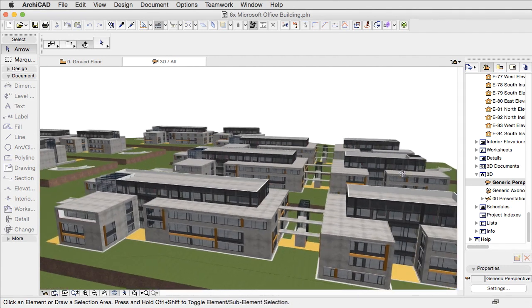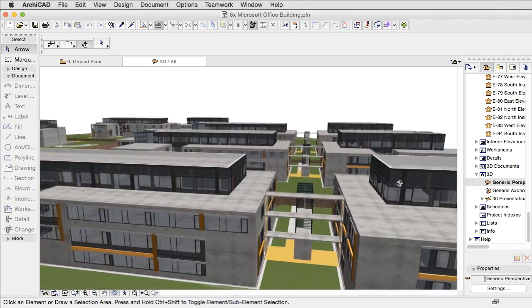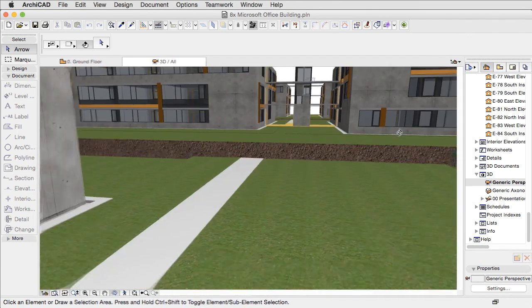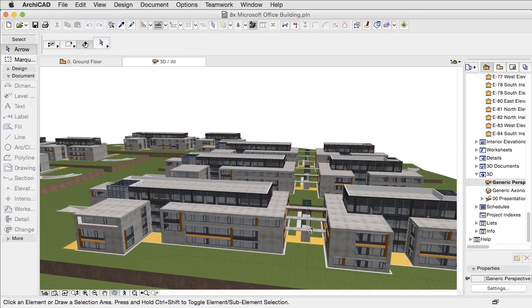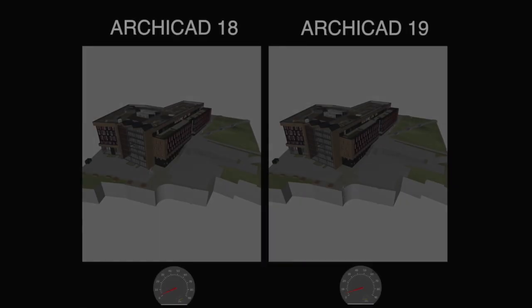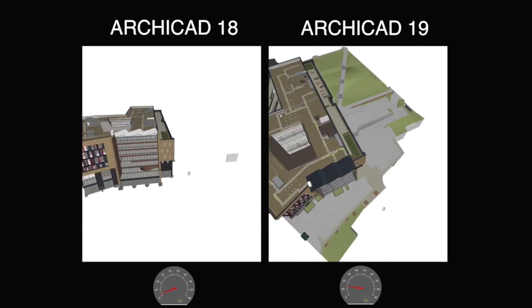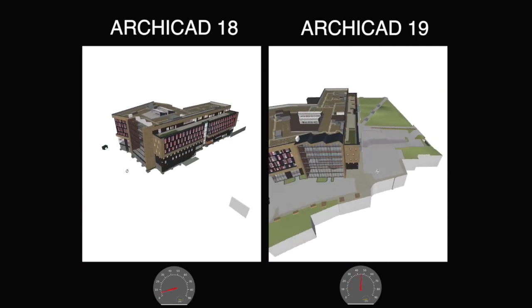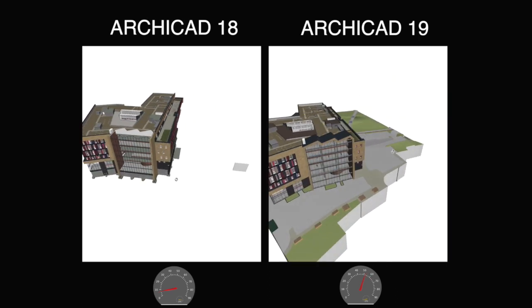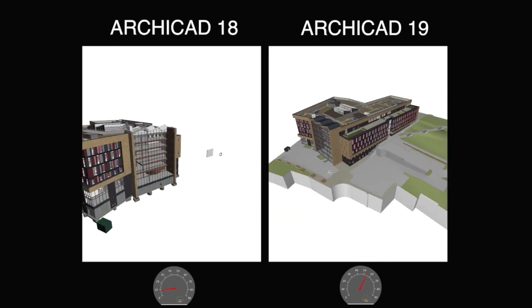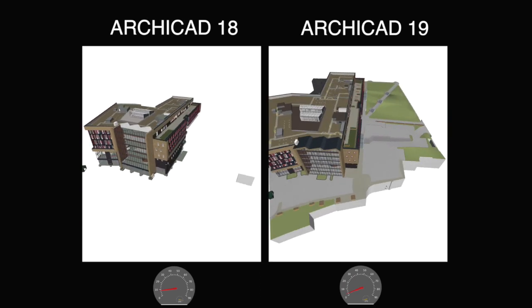Graphisoft handles these requirements with great attention, and as a result, ARCHICAD 19 provides smooth and fast 3D navigation using OpenGL. The enhanced OpenGL technology provides a smooth and fast 3D navigation experience even in cases of big design models.